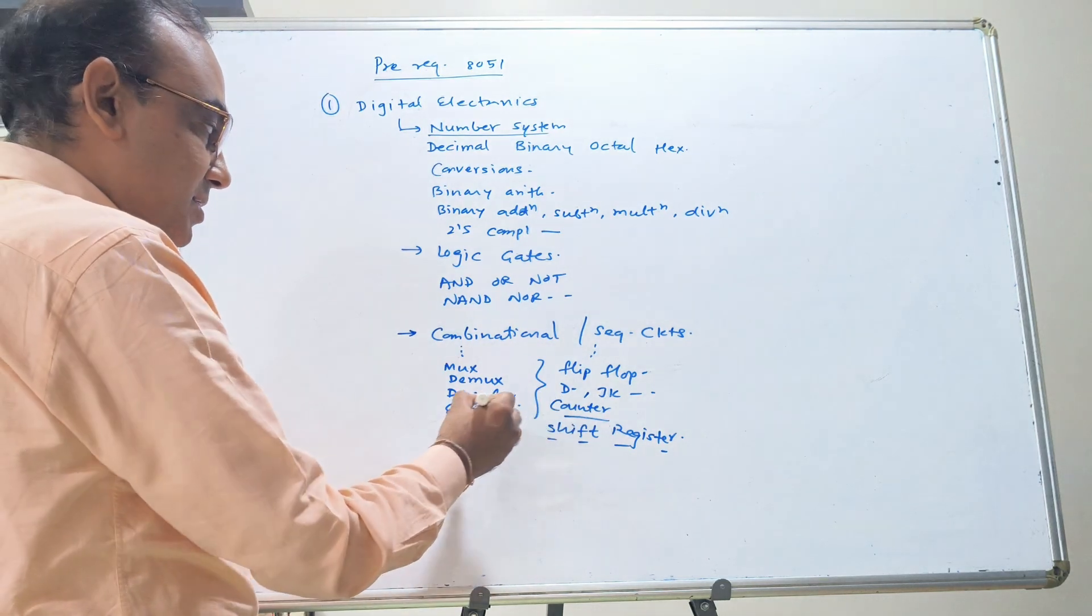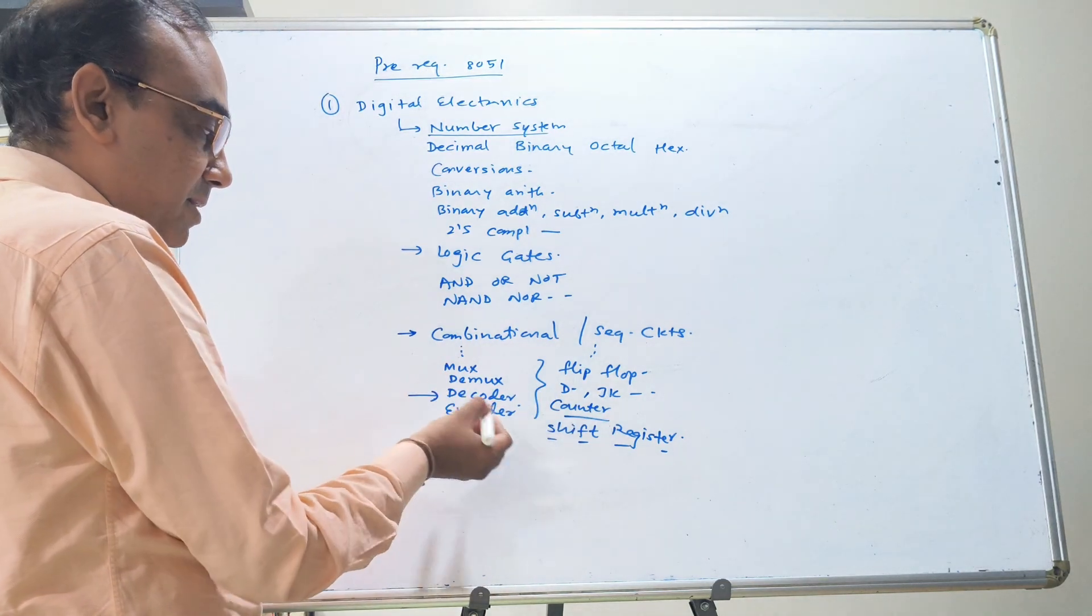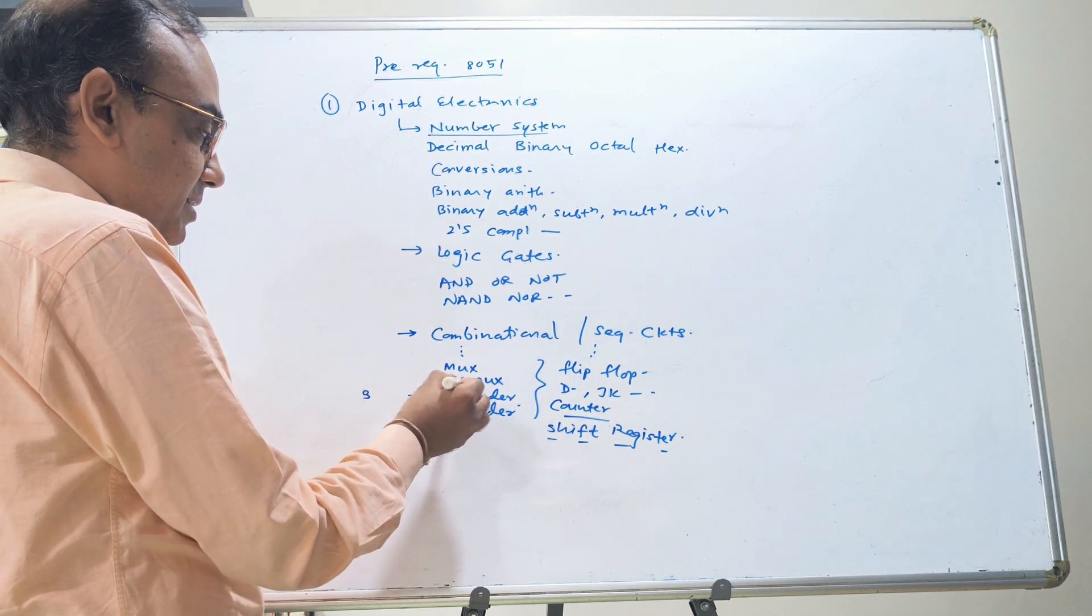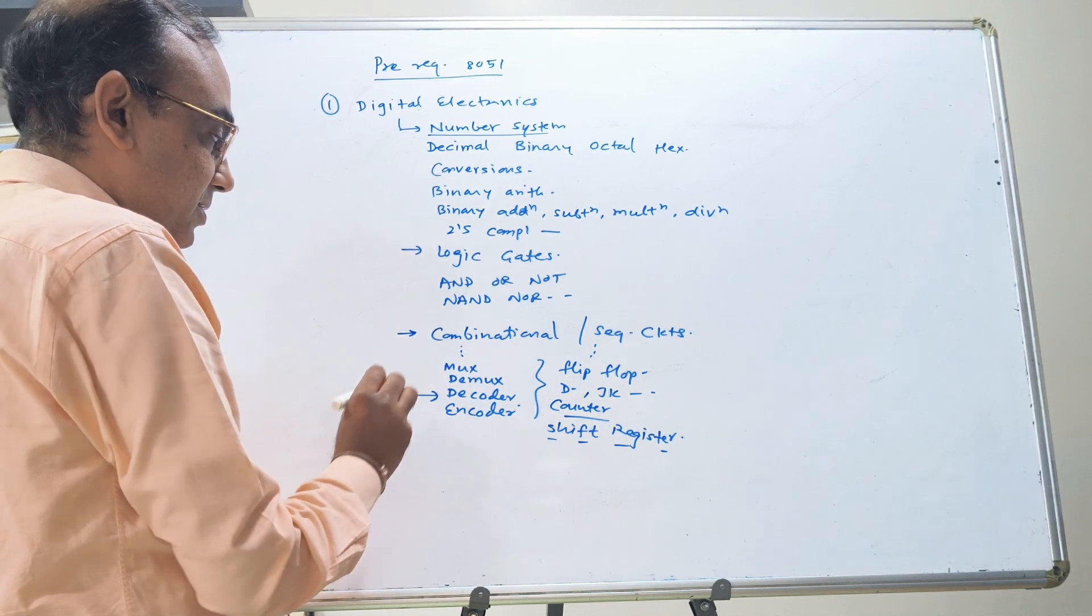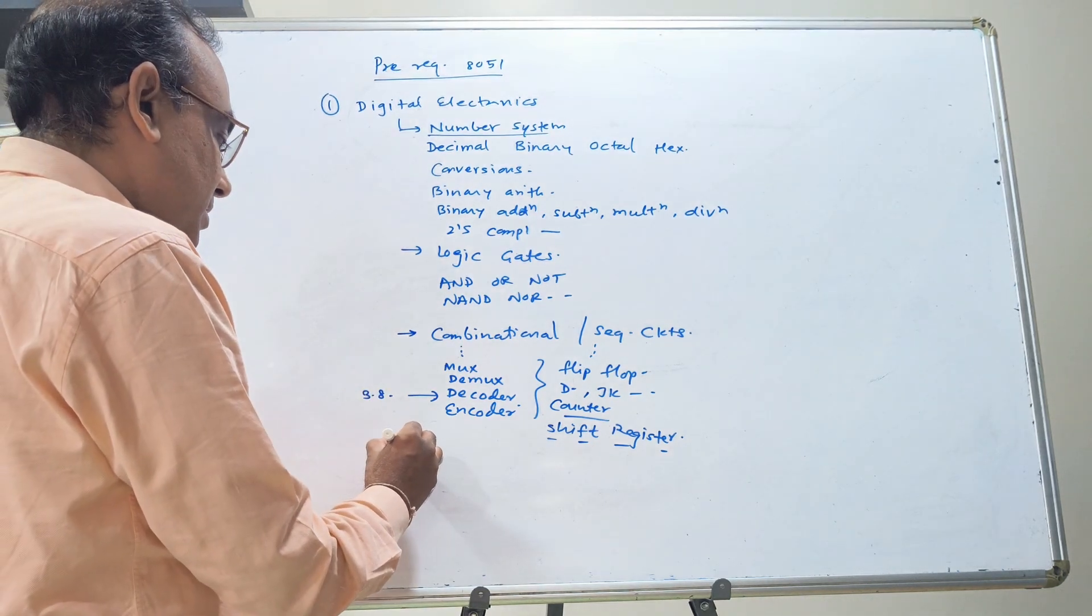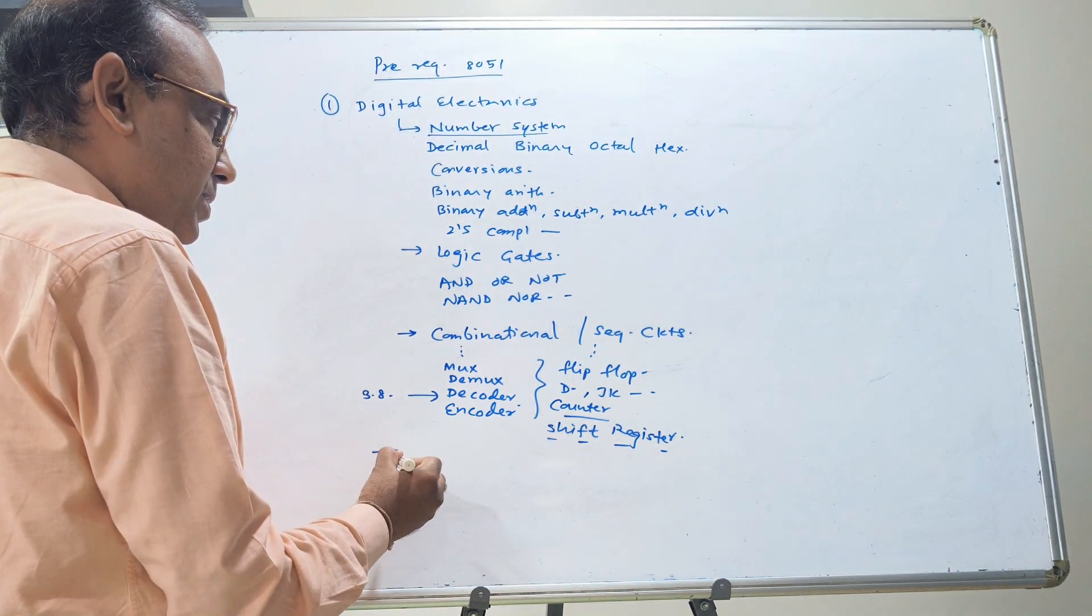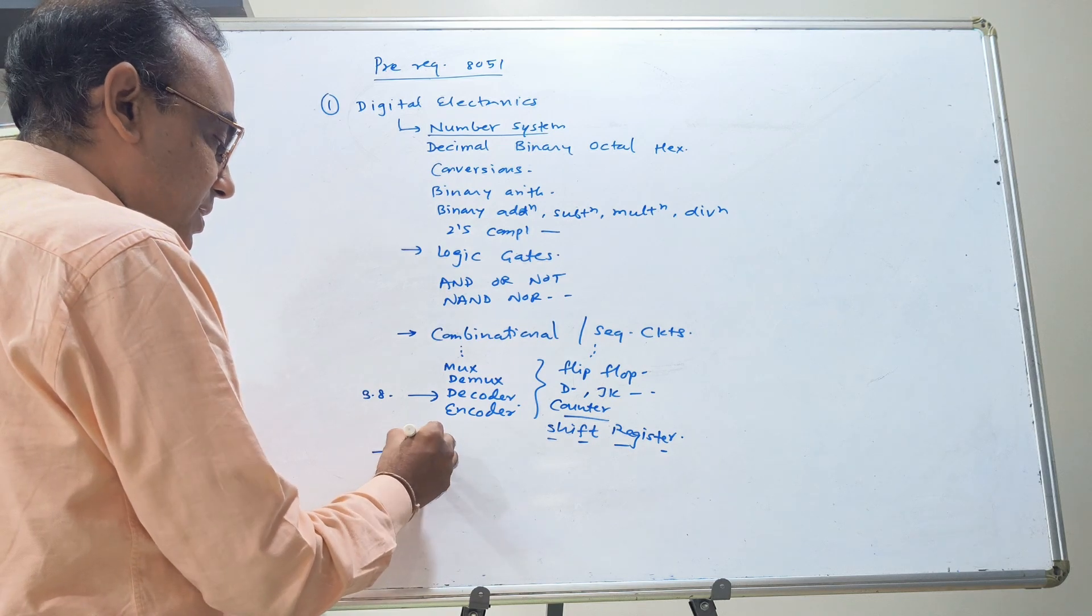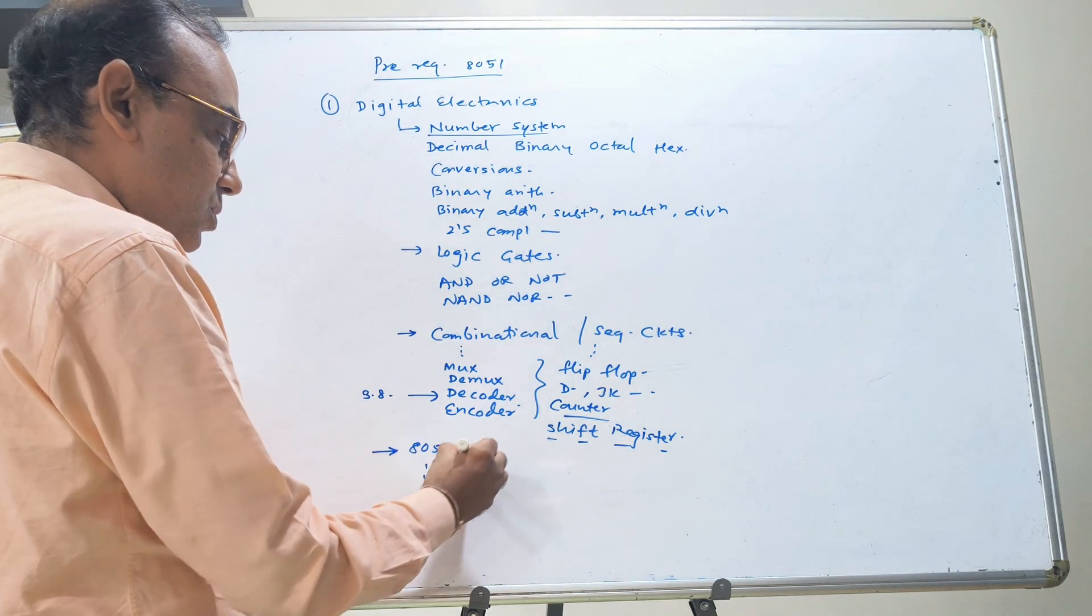We discussed that decoder was needed in memory interfacing. 3-to-8 decoder and all those things. Then you will know 8051 what we discussed in the course.